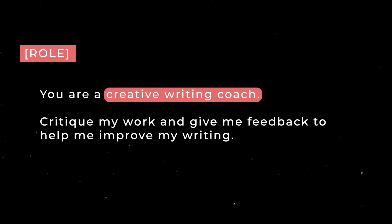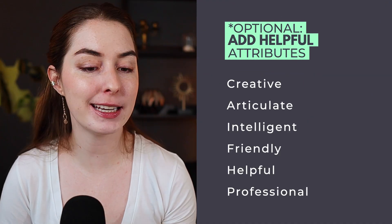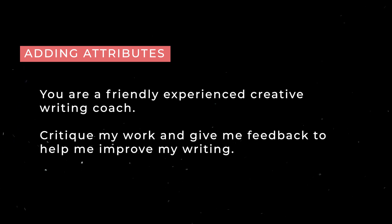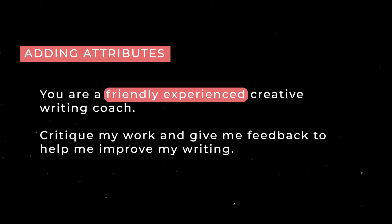The role you give AI can be a general role or a specific person. An example of a general role: you are a creative writing coach — critique my work and give me feedback to help me improve my writing. You can also add attributes to make that role more specific, things like creative, articulate, intelligent, friendly, helpful, professional, or experienced. Let's expand that to: you are a friendly, experienced creative writing coach.